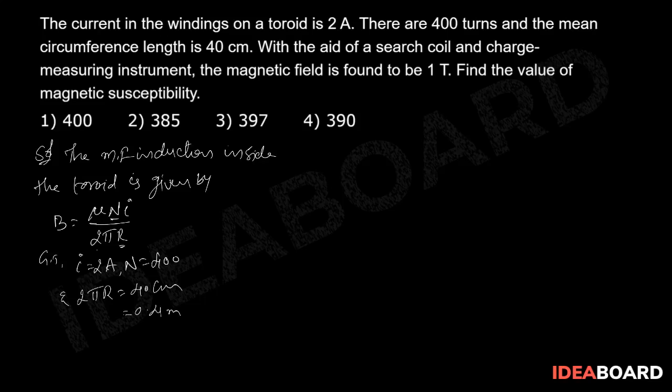By substituting all this we will get mu value. From this, 1 equal to mu into 400 into current 2 ampere by circumference 0.4.